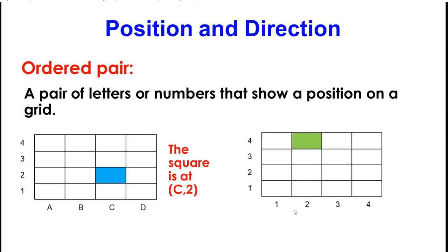Ordered pair can also be with just numbers. So I'm trying to find the ordered pair of this green square. I see it's lined up with 2 and 1, 2, 3, 4. My ordered pair is 2 and 4.